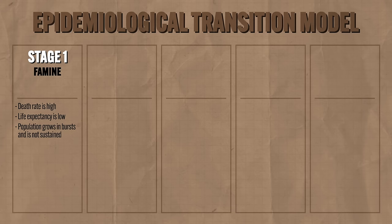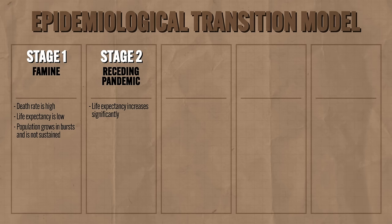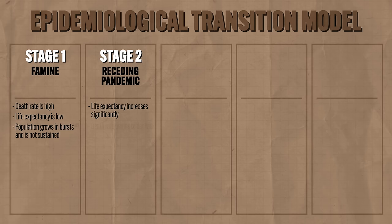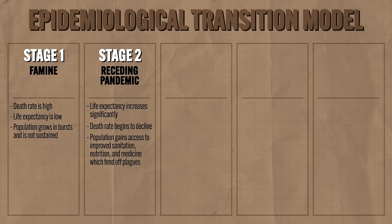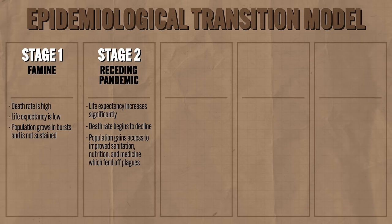Stage two is the receding pandemic phase. Life expectancy increases significantly from about 30 to about 50 years and the death rate begins to decline. Populations enter this phase when they gain access to improved sanitation, nutrition, and medicine. But people are still dying in large numbers — mainly from pandemics, diseases spread throughout regions of the world, especially because people in this stage often live closer together in cities where germs spread easily.